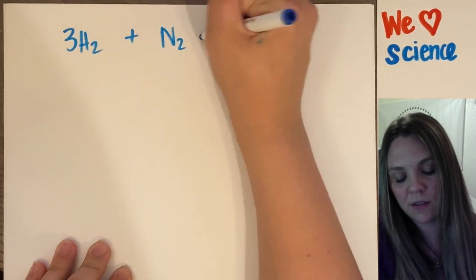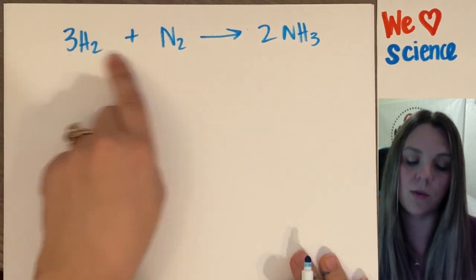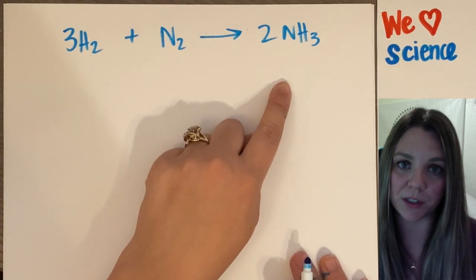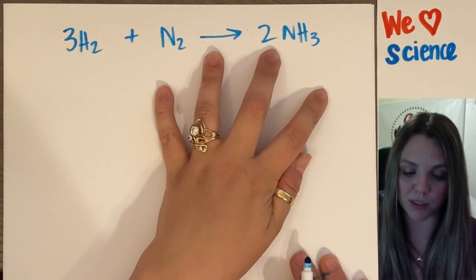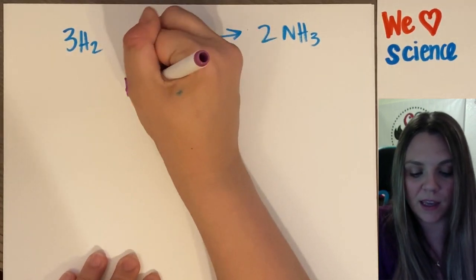Three hydrogens plus nitrogen make two ammonias. You have to have a balanced chemical reaction. That's why balancing reactions is so important. But I have this. Now I want to figure out my K of equilibrium.